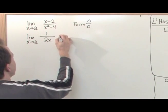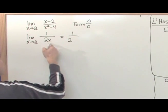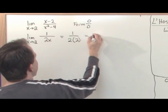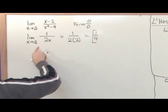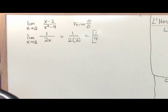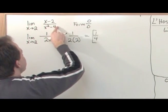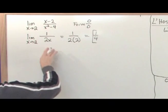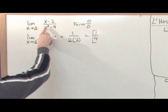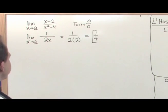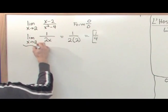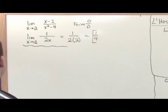Now you evaluate the limit. You're going to have one over two times two, because x is approaching two, so you get one-fourth. This limit converges to the value of one-fourth. So if you were to plot this function, you would find it approaches one-fourth as x approaches two. Even though the top and bottom both approach zero individually, the derivatives tell you the rate of change of the top compared to the bottom, revealing how the ratio behaves as a whole.